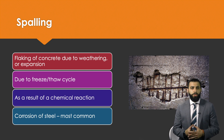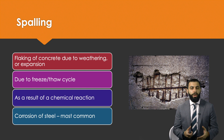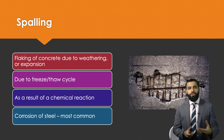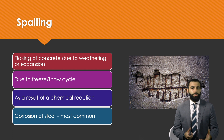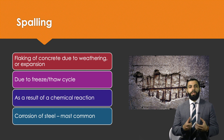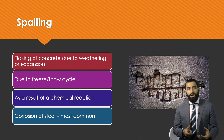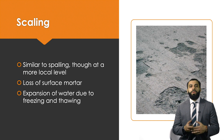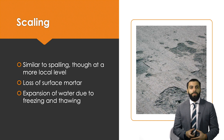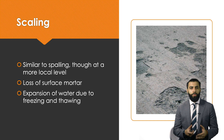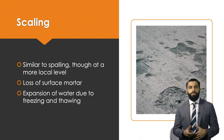Another common cause of spalling is the freezing and thawing of water in cold climates. Concrete contains moisture, and when that moisture freezes and then melts and freezes again, it creates expansion that causes parts of the concrete to flake off. Scaling is similar to spalling, but occurs at a more local level. It involves loss of the surface mortar and is again due to the expansion of water from freeze-thaw cycles in cold climates.